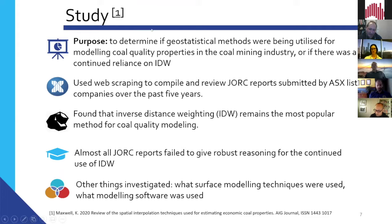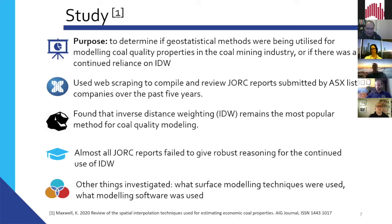So I did a quick study — there's a publication about it hosted by AIG Journal, so thanks for that. I wanted to determine if geostatistical methods were being utilised for coal quality property modelling in the coal mining industry at large, or if we would continue to rely on inverse distance weighting. Because there's a requirement by the ASX to report results against the JORC and black book guidelines, I thought that would be the best place to start. I used a web scraping algorithm to compile a whole host of JORC reports submitted by ASX-listed companies over the past five years.